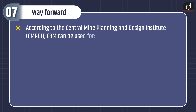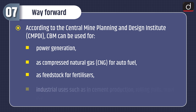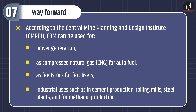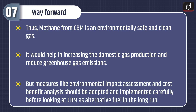Lastly, let's discuss the way forward. According to the Central Mine Planning and Design Institute, CBM can be used for power generation, as compressed natural gas or CNG for auto fuel, as feedstock for fertilizers, industrial uses such as in cement production, rolling mills, steel plants, and for methane production. Thus, methane from CBM is an environmentally safe and clean gas. It would help in increasing domestic gas production and reduce greenhouse gas emissions. But measures like environmental impact assessment and cost-benefit analysis should be adopted and implemented carefully before looking at CBM as an alternative fuel in the long run.